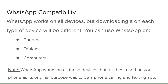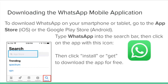To download WhatsApp on your smartphone or tablet, go to the App Store for iOS or the Google Play Store for Android. Type WhatsApp into the search bar, then click on the app with the green phone icon.